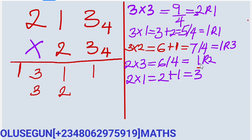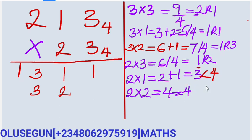Now you multiply 2 with 2. 2 multiplied by 2 gives us 4. Recall that 4 equals 4 — it is still the same. So 4 divided by 4 goes in 1, remainder 0. You write the remainder as 0. Since 2 is not multiplying anything any longer, you write the 1.